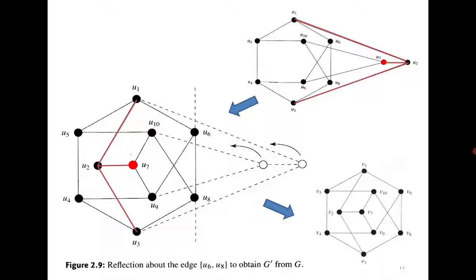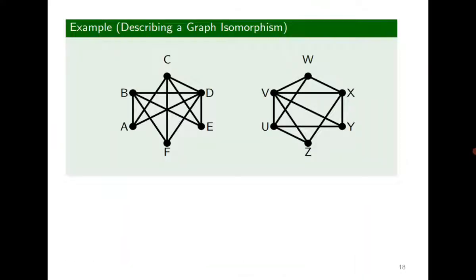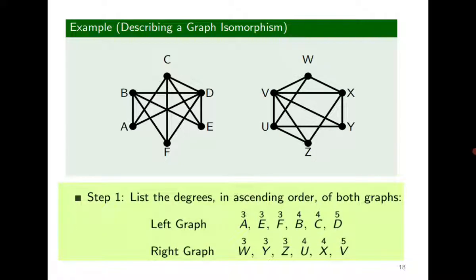The point is that it is not always possible to visually transform one graph into the other, especially when the graphs are large. Therefore, we need a systematic technique to check if two graphs are isomorphic. Consider the following two graphs. The first step is to check that the number of vertices and the number of edges are the same in both graphs. If they are, we proceed further. The next step is to look at the degree sequence. Both graphs should have the same degree sequence.